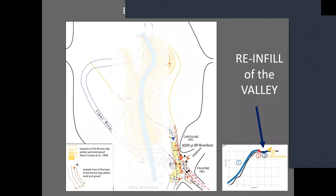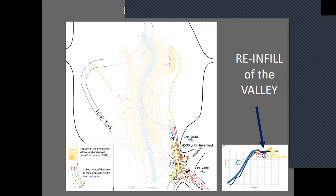Moving forward in time, the valley starts to refill and behave in a more normal way. We don't yet understand the explanation for the six-to-five-thousand-year anomaly. During the Bronze Age the valley begins refilling again, and the river appears to have moved within the valley several times — sometimes closer to Rome, sometimes closer to what we now call Trastevere. A crucial implication is that the first archaeological evidence from the middle to late Bronze Age on the Capitoline Hill actually dates to a time when the river was not close to Rome at all — it was on the other side of the valley.